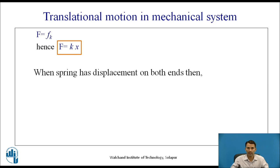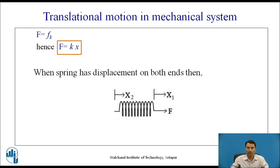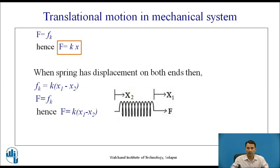Now let us consider the spring with displacement from both ends. As shown in the diagram, the spring has displacements X1 and X2. According to the equation, Fk = K × (X1 - X2). Since there are two displacements and according to Newton's third law F = Fk, the equation becomes F = K × (X1 - X2).